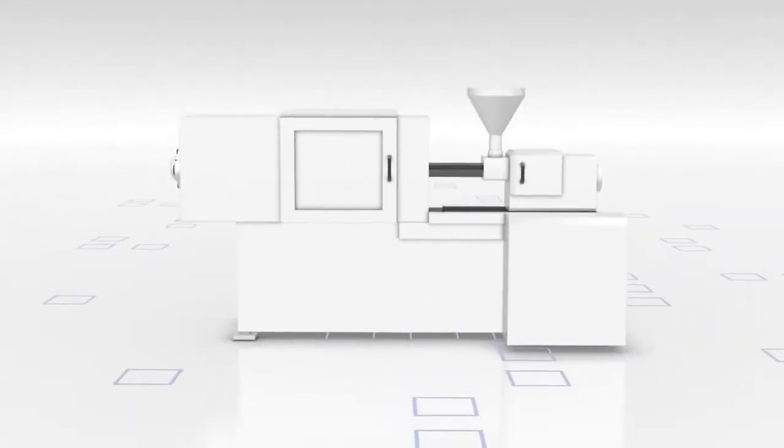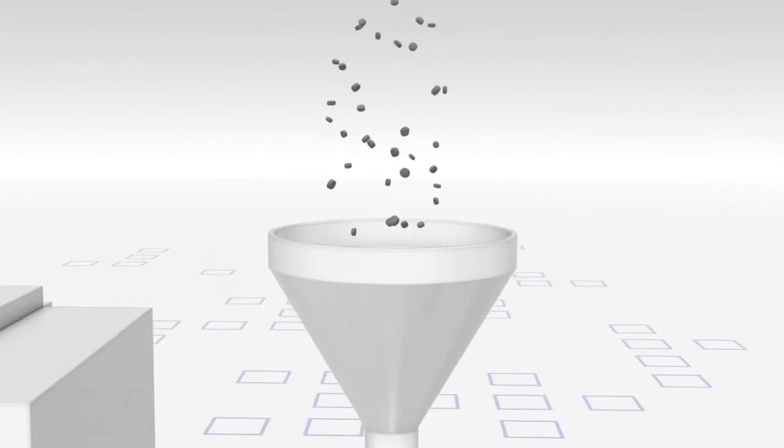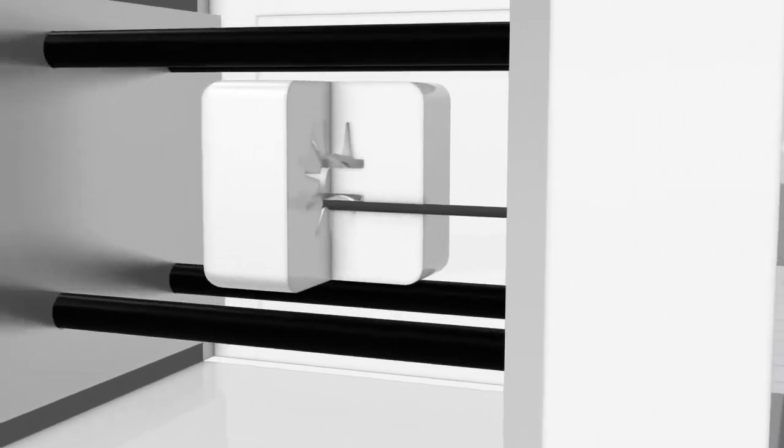In just three steps, Catamold produces a complex component. BASF produces the granulate which can be easily processed in conventional injection molding machines.